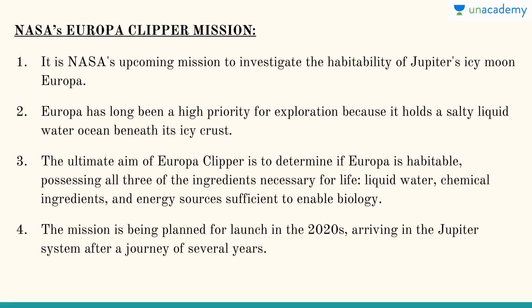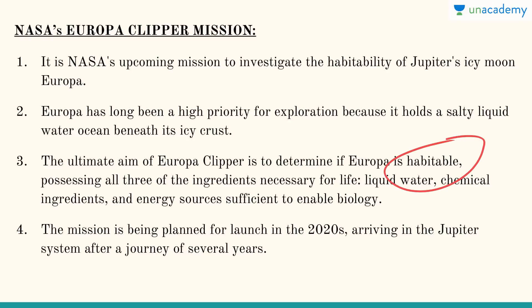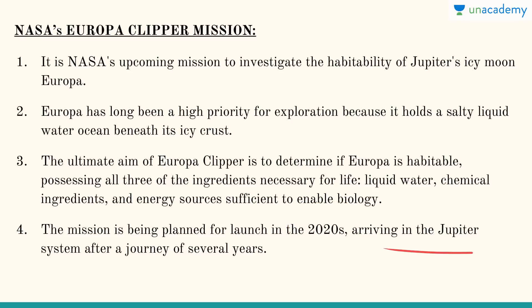Finally, we have NASA's Europa Clipper mission — NASA's upcoming mission to investigate the habitability of Jupiter's icy moon Europa. Europa has long been a high priority for exploration because it holds a salty liquid water ocean beneath its icy crust, suggesting there could be life there. The ultimate aim of Europa Clipper is to determine if it is habitable — possessing all three ingredients necessary for life: liquid water, chemical ingredients, and energy sources sufficient to enable biology. The mission is planned for launch in the 2020s and will arrive at Jupiter after a journey of several years.